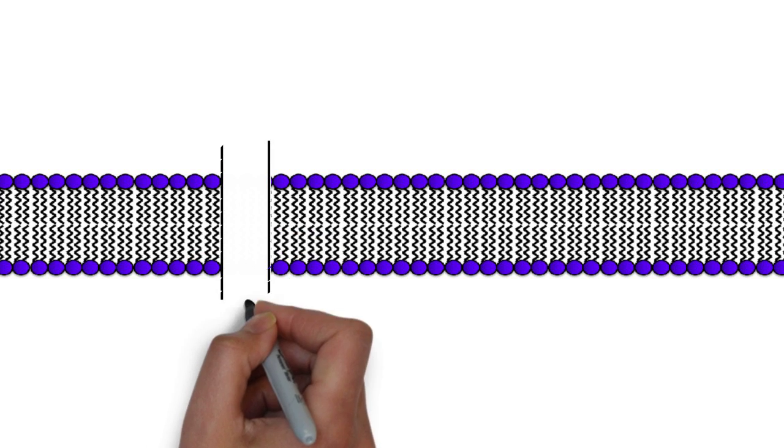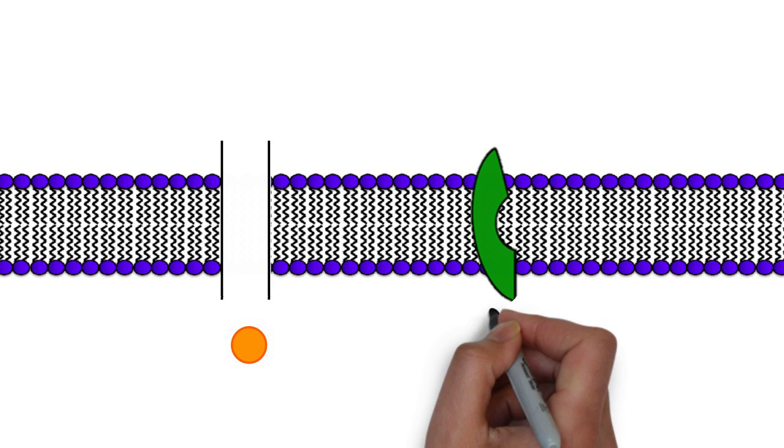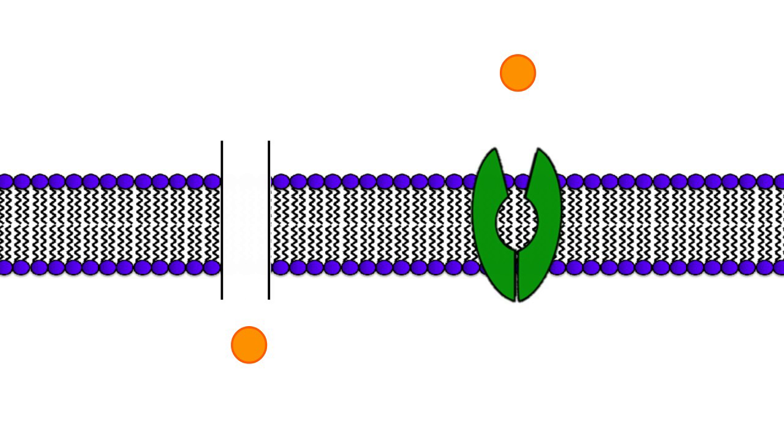A simple example of these are the channel proteins acting just like passageways to allow specific molecules to pass through them through the cell membrane. Another example are the carrier proteins which bind specifically to specific molecules and are able to change its own conformation to allow the molecules to go into the cell, acting similar to a revolving door.